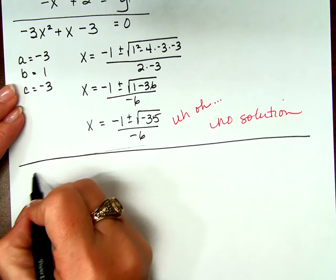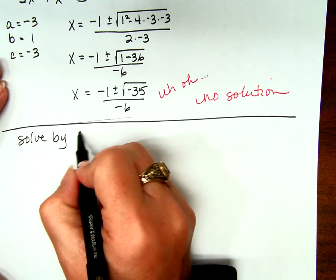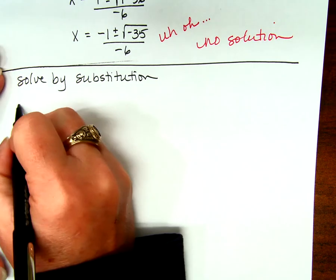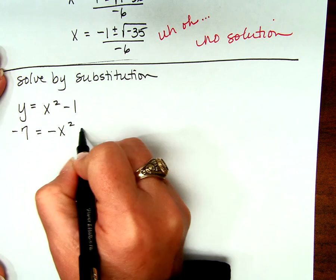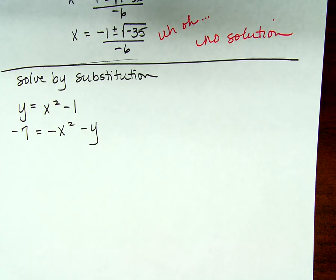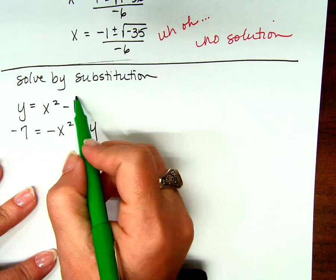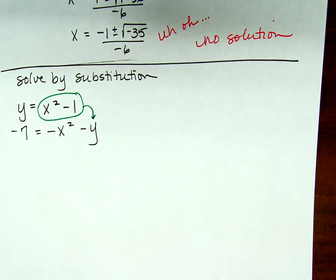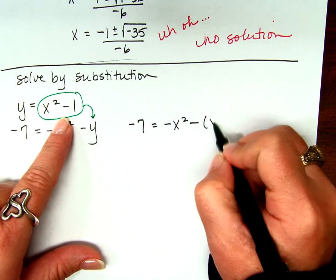Was that your favorite one? Is that why we saved it till last? Okay, we can agree to disagree. Solve by substitution. Y equals x squared minus 1; negative 7 equals negative x squared minus y. If we are solving by substitution, we take what we know y equals — and they very kindly already solved for y for us — and substitute it into the other equation for y. So: negative 7 equals negative x squared minus (x squared minus 1).